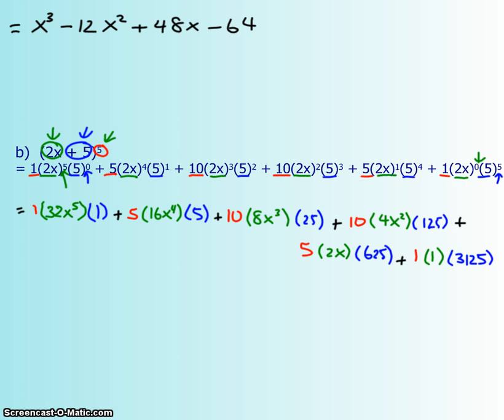Last step, putting everything together now. 1 times 32 times 1 is 32x^5 plus I'm going to need a calculator. 5 times 16 times 5 you get 400x^4, then 10 times 8 times 25, 2000x^3. This would have taken me a really long time if I had done it the long way and I probably would have made a mistake. 5 times 2 times 625, 6250x, and then the last term is 3125. So there you go, that's using the Pascal's triangle for binomial expansion.